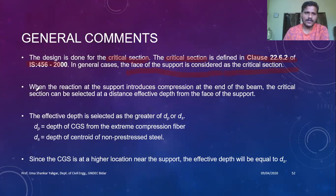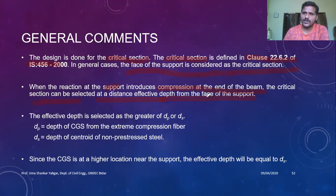When the reaction of the support induces compression at the end of the beam, the critical section is selected at a distance of effective depth from the face of the support. This is generally observed while designing footings in RCC members, where one-way shear is critical at a distance 'd' from the face of the column — because the member is subjected to compression. If the reaction induces compression, the critical section is taken at a distance of effective depth 'd' from the face of the support.